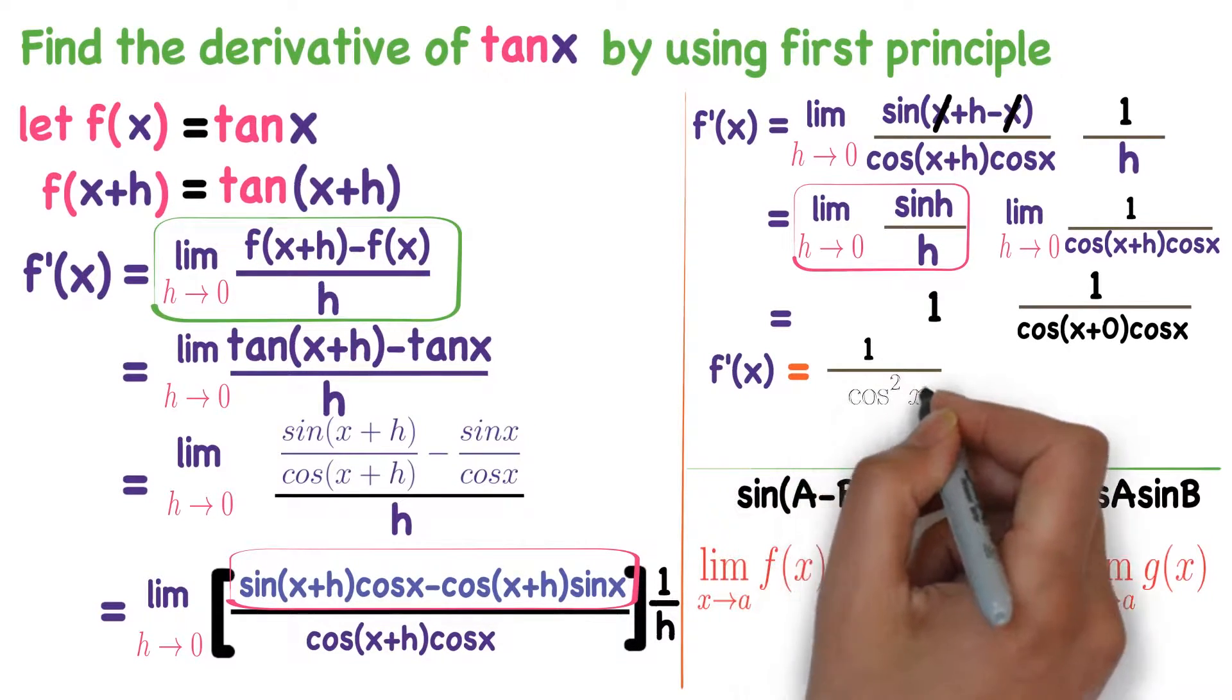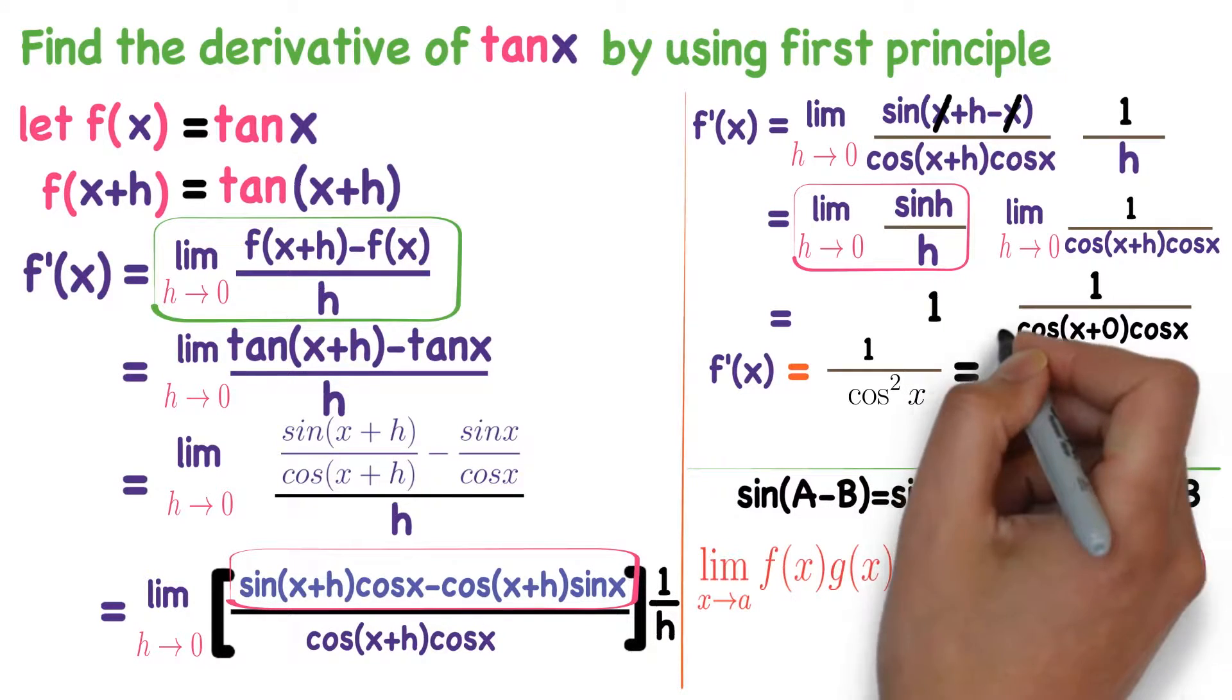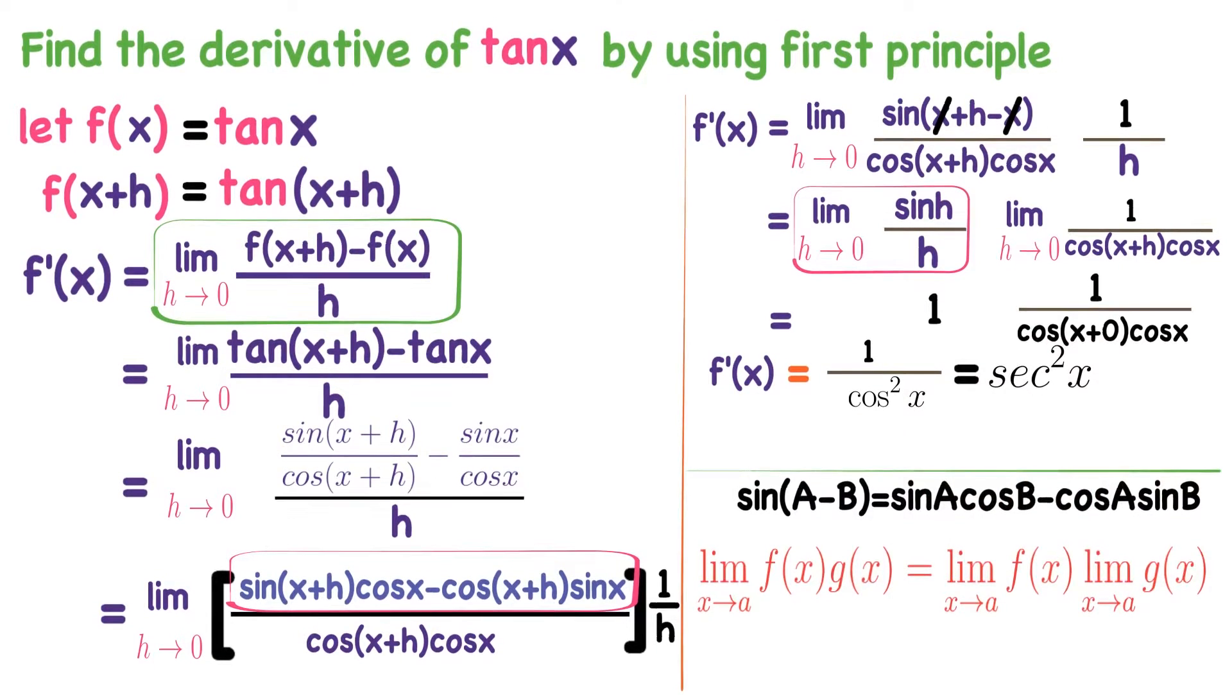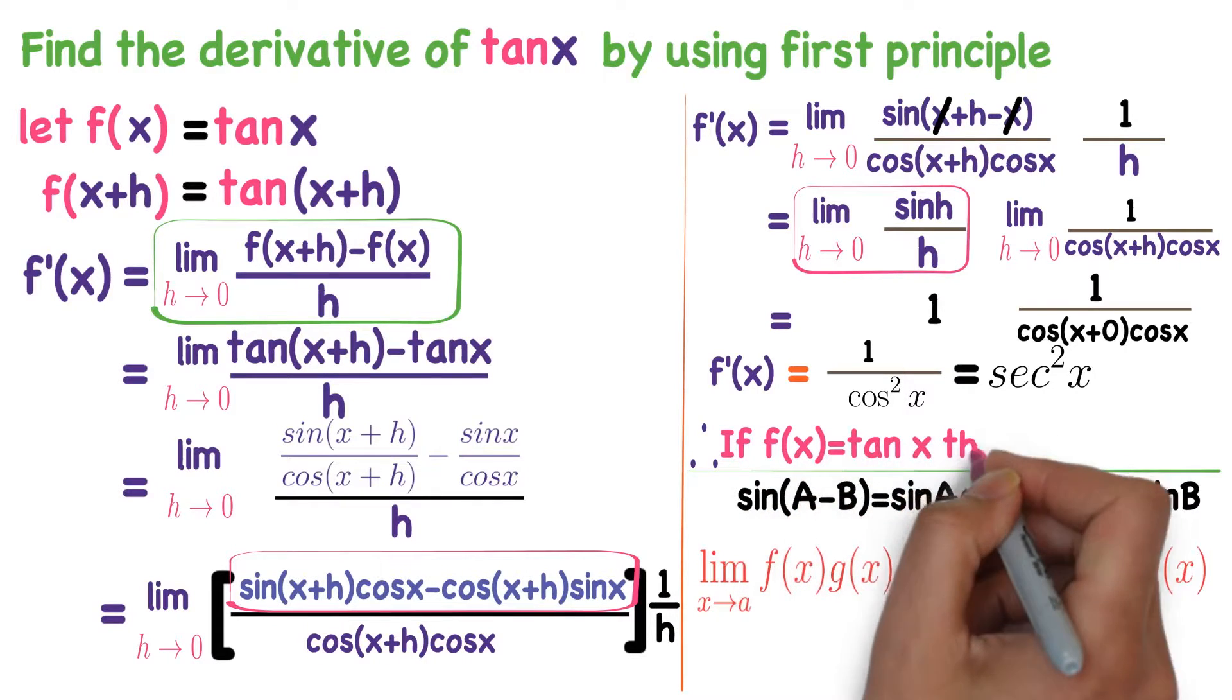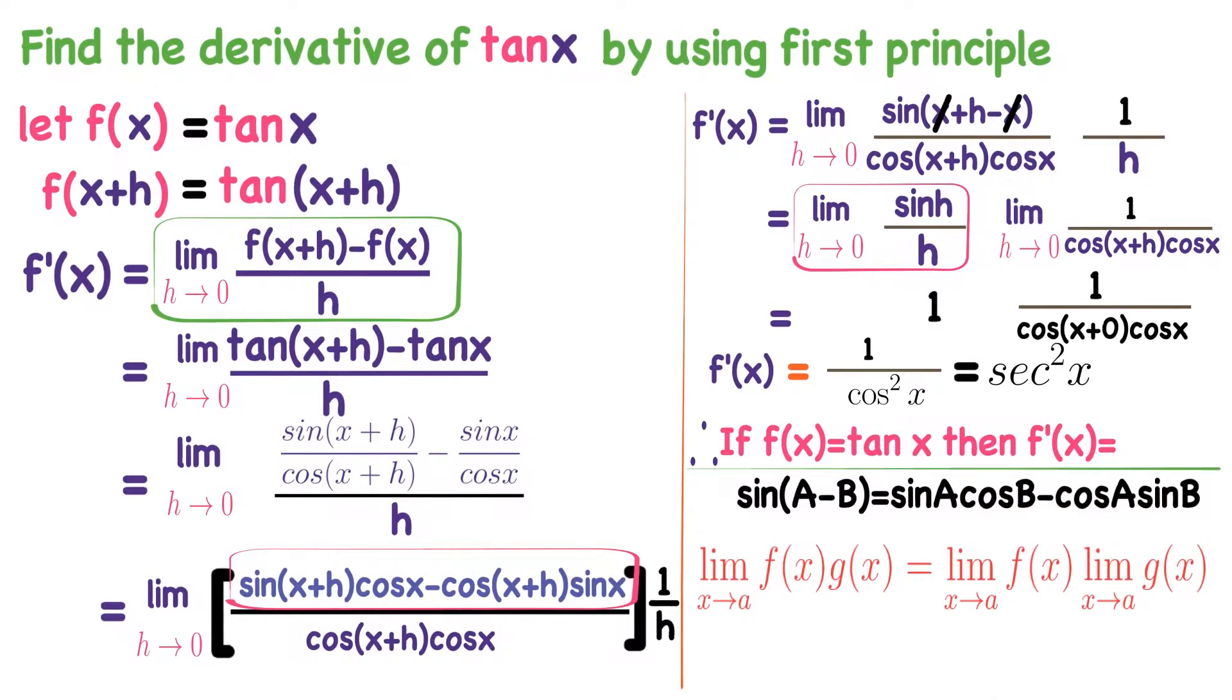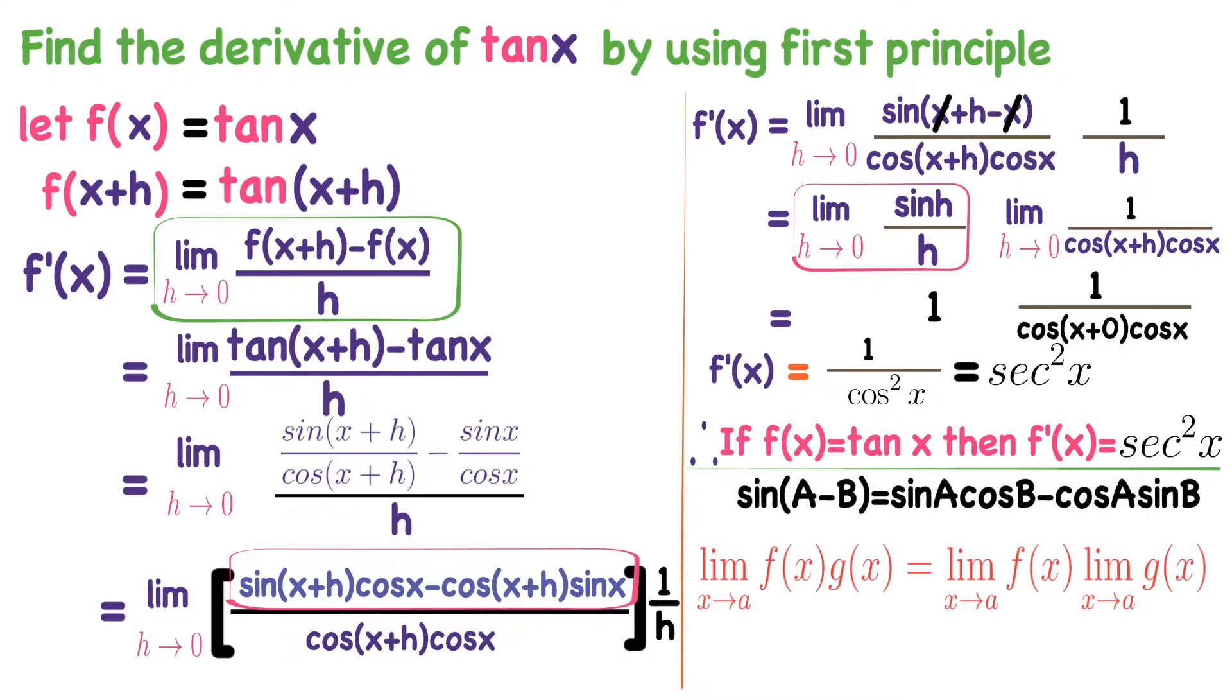What is 1 divided by cos x formula? 1 divided by cos x is secant x. 1 divided by cos square x is secant square x. So if f(x) is tan x, then its derivative f'(x) is secant square x. From now onwards, we take this as a formula. Derivative of tan x is secant square x.